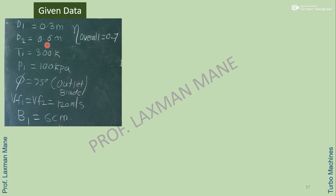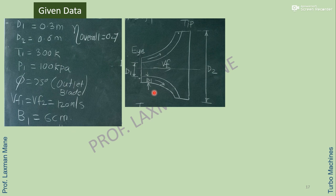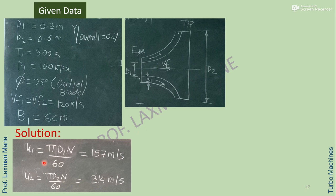Given values: D1, D2, inlet static temperature and pressure, outlet blade angle phi, flow velocity as constant, blade width at inlet B1 in cm, and overall efficiency. In the diagram, the eye has diameter D1 and the tip has diameter D2. The width of the impeller blade is B1. First, we calculate U1 and U2 by putting the corresponding diameters D1 and D2 and speed into the respective equations.